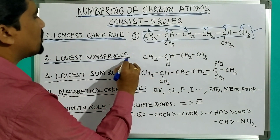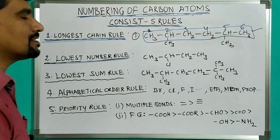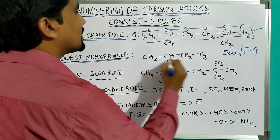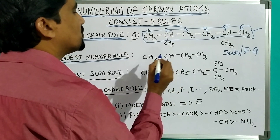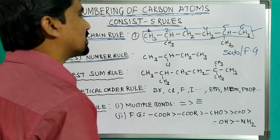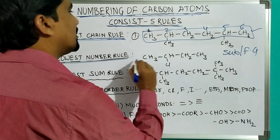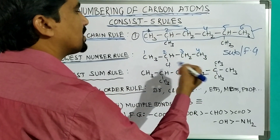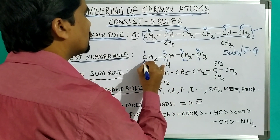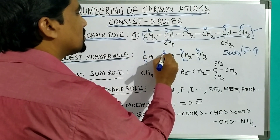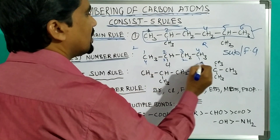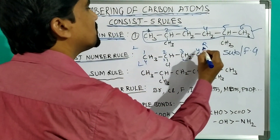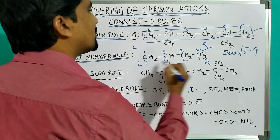The next rule is the lowest number rule. We must assign the least numbers for the substituents or functional groups. Here, in this example, substituent chlorine is there. So we must assign the least number for this chlorine. That's why I am numbering from left to right: one, two, three, four. Suppose I numbered from right to left: one, two, three, four. The chlorine gets two when going left to right, and three when going right to left. So the least number is two, meaning left to right is correct and right to left is wrong.